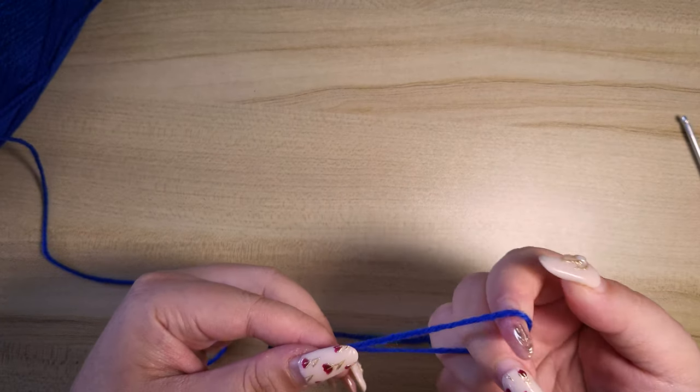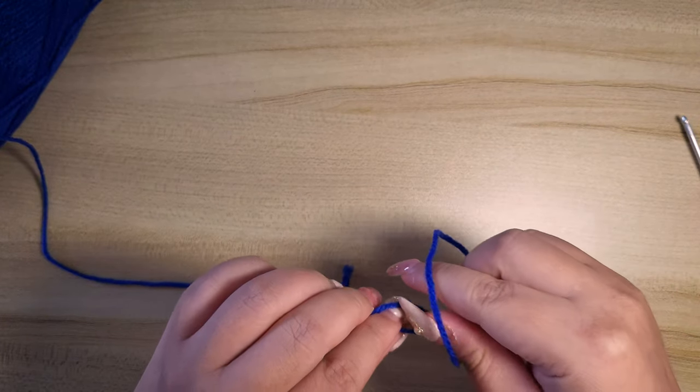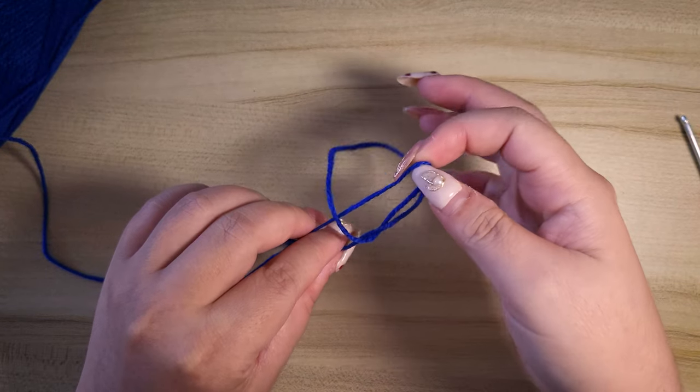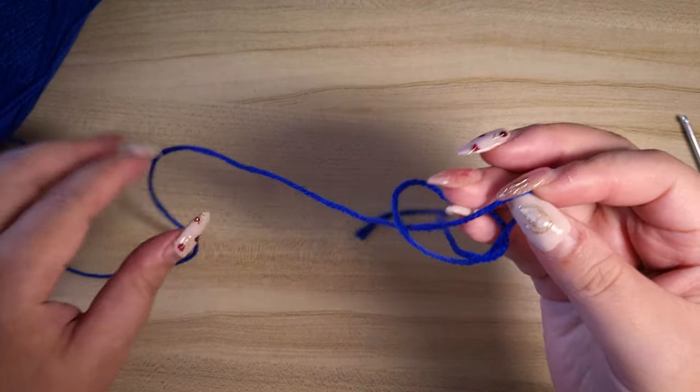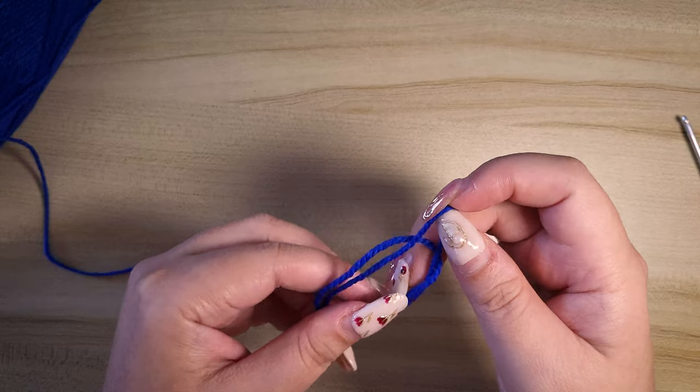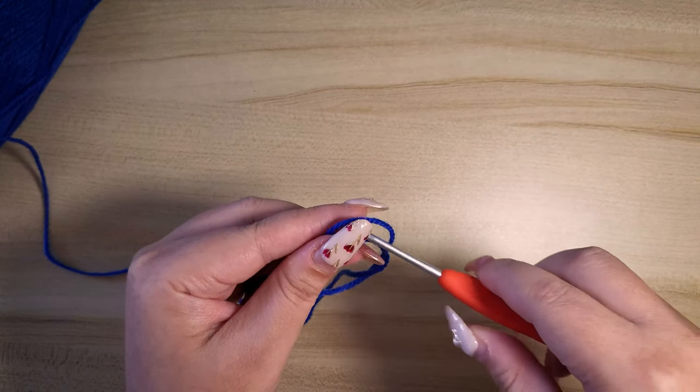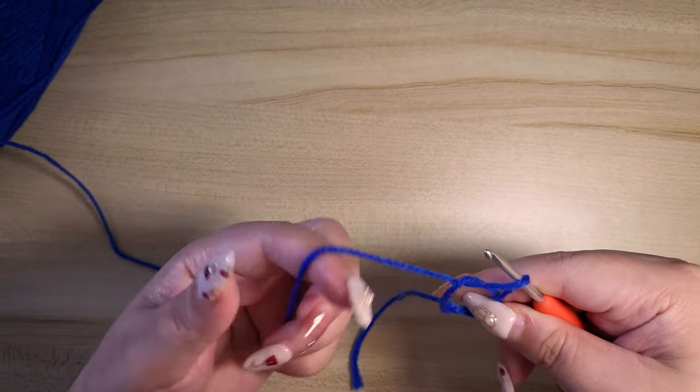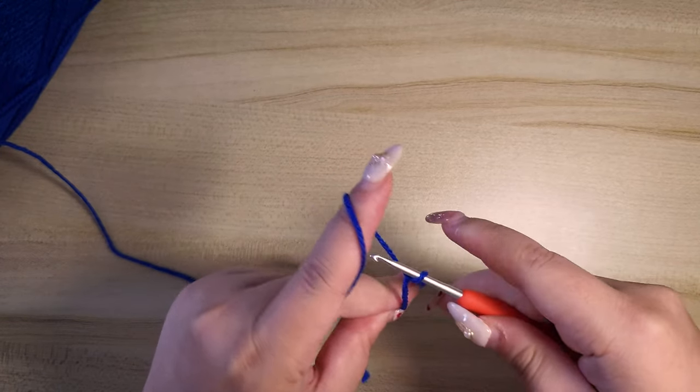To start, we begin by creating a magic ring. I'm going to pop my magic ring video on the top right hand corner here. The video shows this technique in slow motion if you need help on creating magic ring.